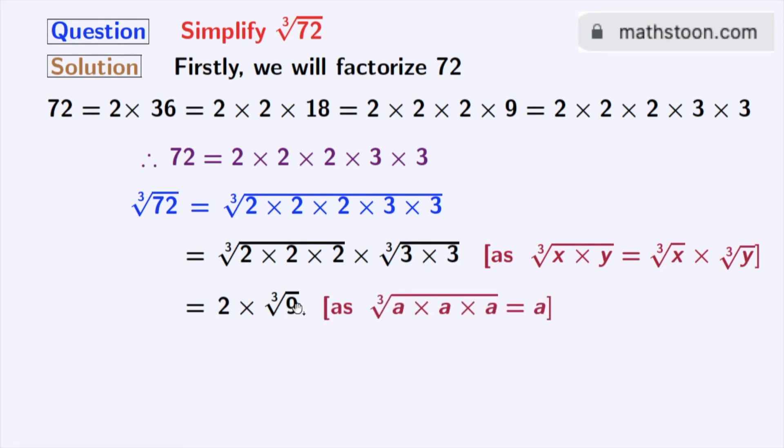In the first cube root we have used the rule of cube root of a times a times a is equal to a. Here a is 2. Now after multiplication we get 2 cube root of 9 as our final answer.